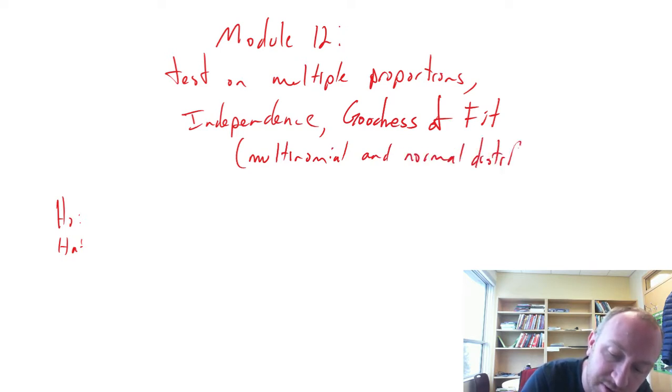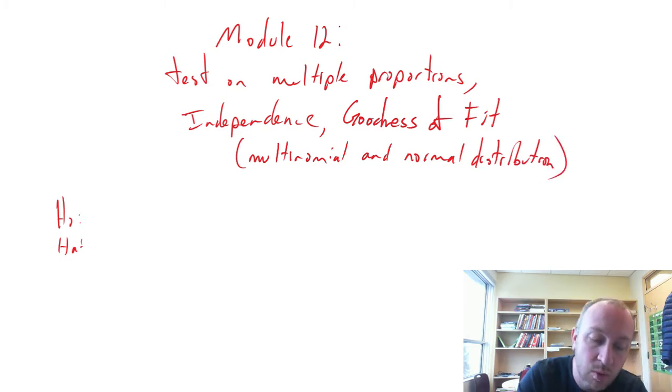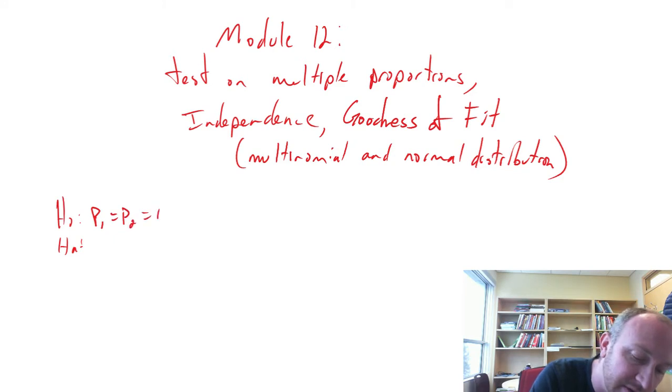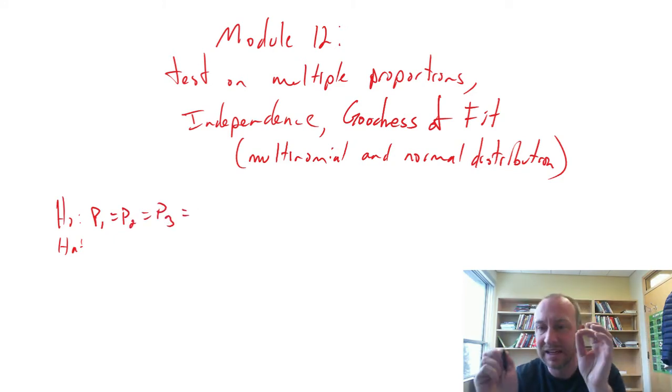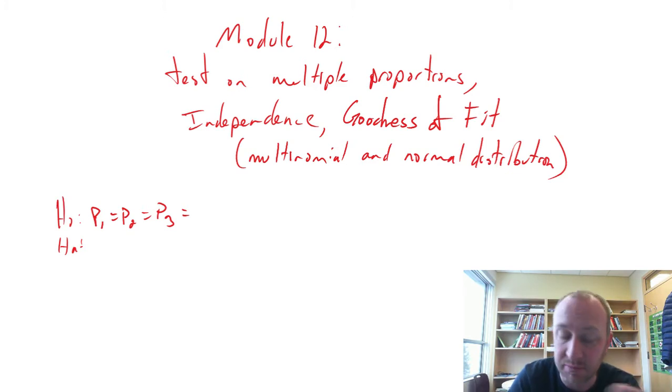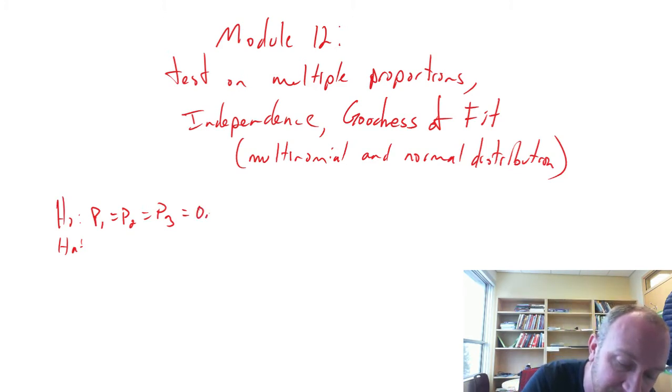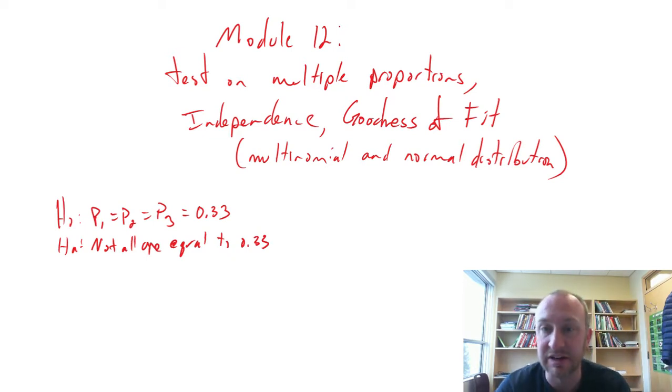So the multinomial test that we'll be looking at would be one such that P1 is equal to P2 is equal to P3 is equal to some identical, some specified proportions. So these are all equal to let's say 0.33. Alternatively, not all are equal to 0.33. So that would be either it does follow a multinomial distribution or it does not follow a multinomial distribution.